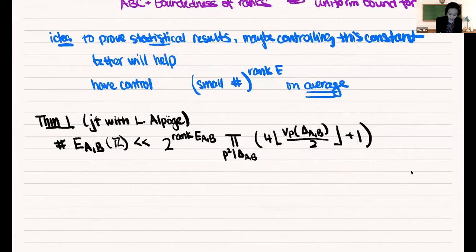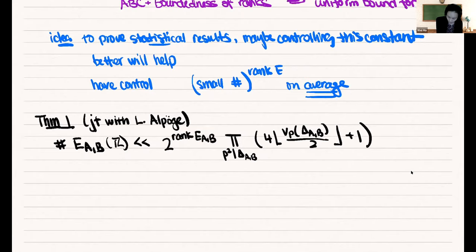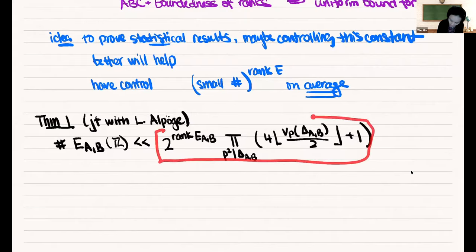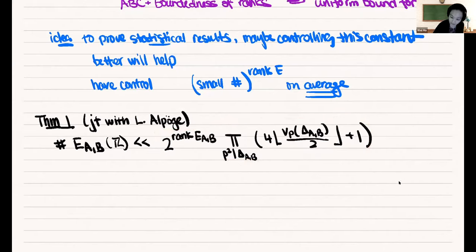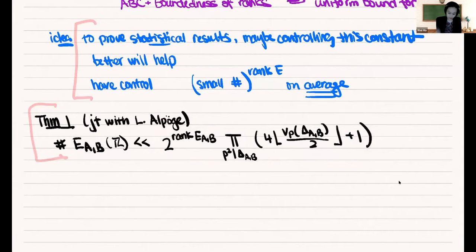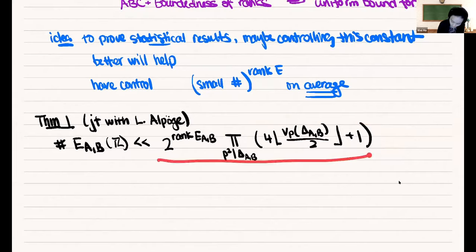One can generalize this theorem to S-integral points over number fields — you still get something like 2^{rank(E/K)}, times a constant to the number of places in S, times a factor involving the two-torsion of the class group of the number field. I won't write it down, but it does generalize. What I want to focus on is using this theorem to get statistical results. I claimed we have control on average of 2^{rank}, and control of that product on average as well, so putting them together should give control of the entire thing on average.